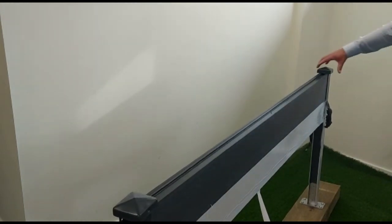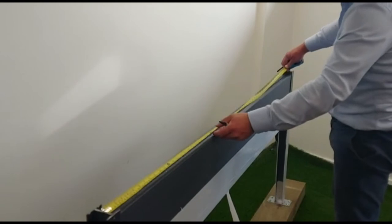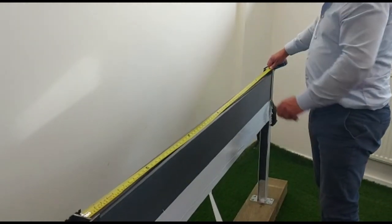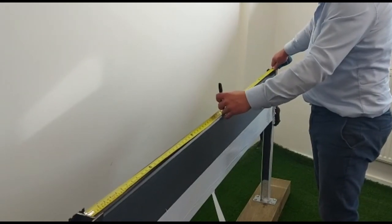We then take the caps off that we've obviously not fixed on, so we've just positioned loosely, put them to one side, and then measure the centre between the post. So 1800, centre 900, so we're going to make a little mark there, 900.